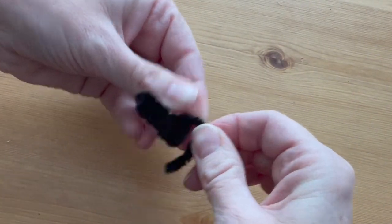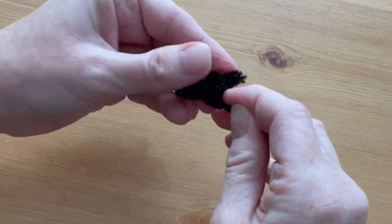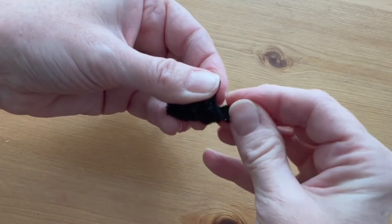Form little ears with the rest of the pipe cleaner just by folding little triangles at the top of the head.